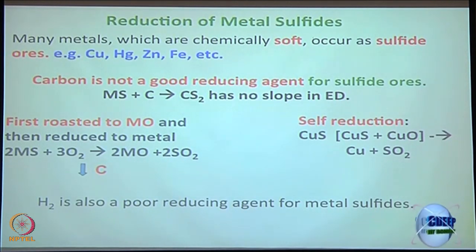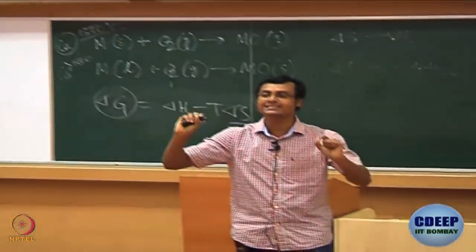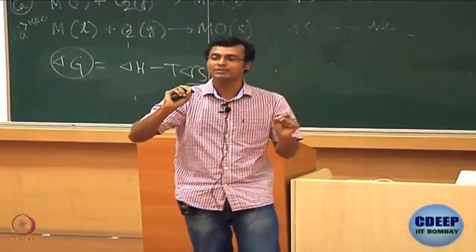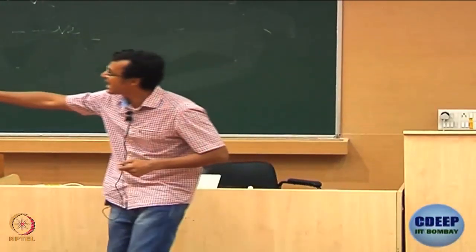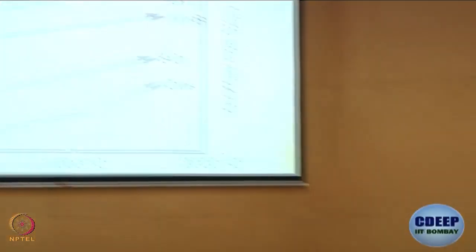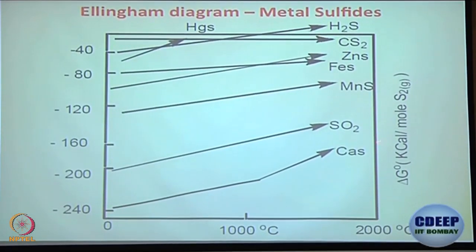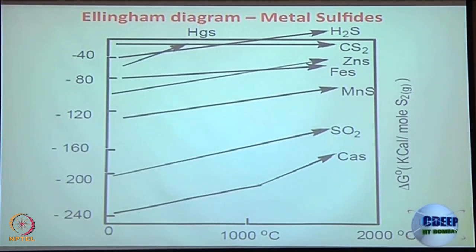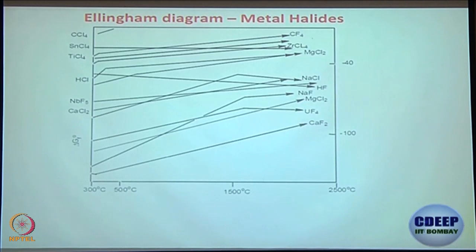Hydrogen is also a poor reducing agent for metal sulphide — you have to compare whether delta G for hydrogen going to water is more or less negative than the metal going to metal sulphide. In the Ellingham diagram for metal sulphide, the curves are not as thermodynamically favorable as the metal oxide curves, which go down to minus 2000 or 3000. That is a good thing, because you can convert the sulphide to metal oxide and proceed from there.